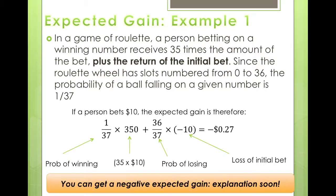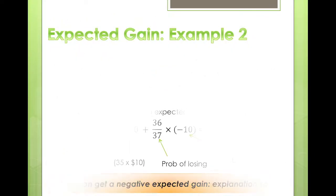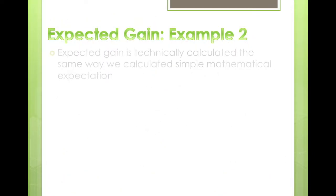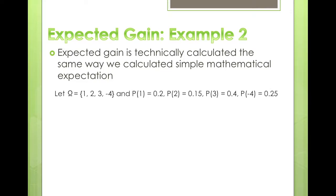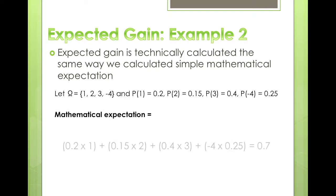You can get a negative expected gain, which I will explain shortly. Expected gain is technically calculated the same way as simple mathematical expectation: we have the set of values omega and the probability of each variable, and the mathematical expectation is each value multiplied by its probability and summed together.